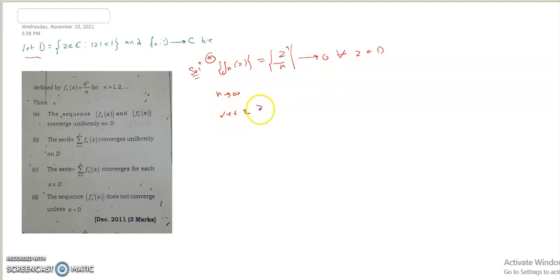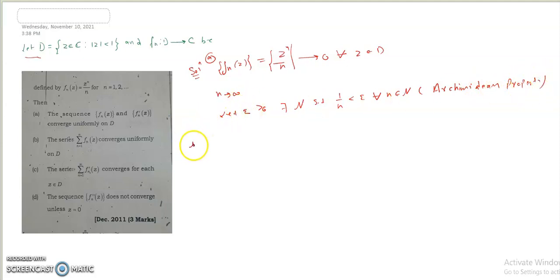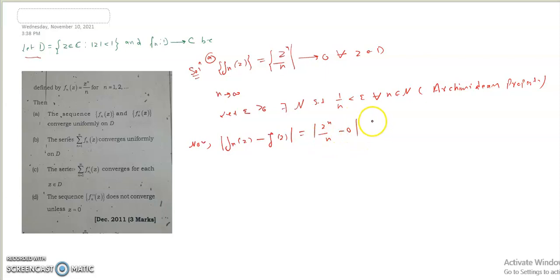For epsilon positive, an arbitrary number, there exists N — a natural number — such that 1/n < epsilon. This is the Archimedean property: for epsilon positive, there exists N such that 1/n < epsilon for all n in the natural numbers. Now we find |fn(z) − f(z)| = |z^n / n − 0|.